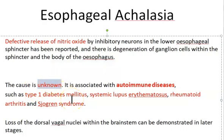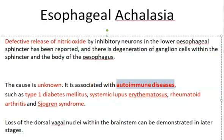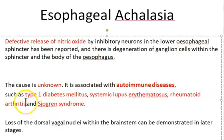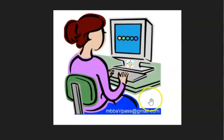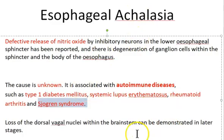When you come to the cause, it is unknown. It can be associated with autoimmune diseases — like type 1 diabetes mellitus, systemic lupus erythematosus, rheumatoid arthritis, and Sjögren's syndrome. So for the cause of esophageal achalasia, you will write unknown cause and autoimmune diseases, listing all those diseases.